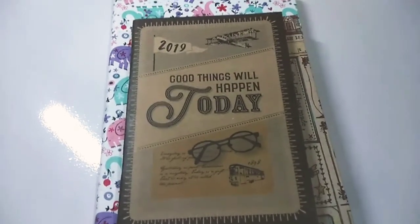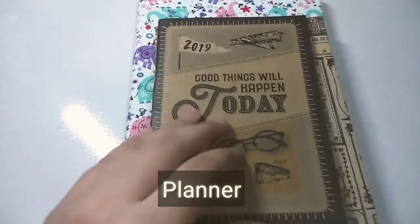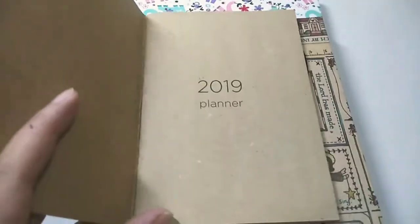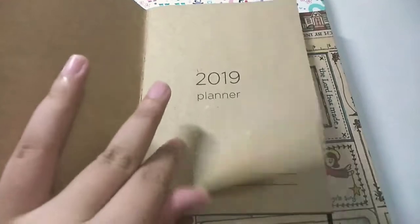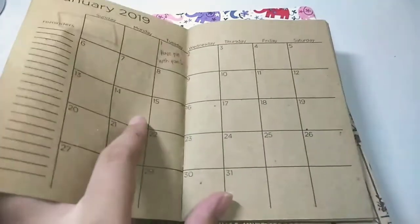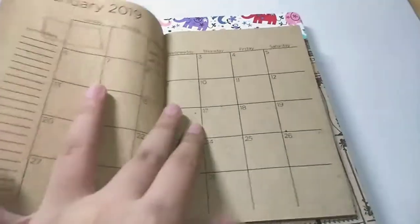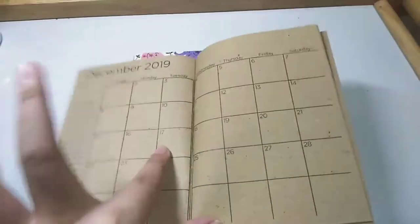Next are my journals. This is my planner for 2019. I don't usually have planners and this is my first time buying a planner, so I think I'll give it a try this year.